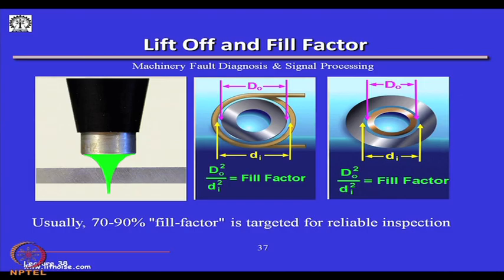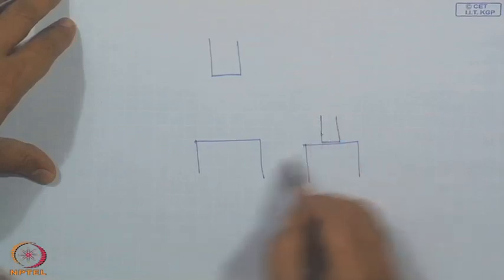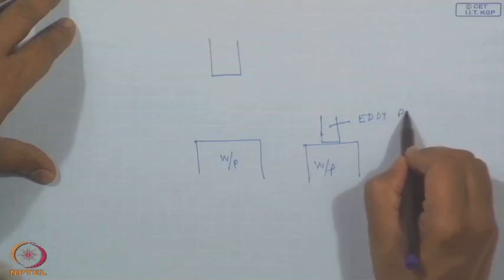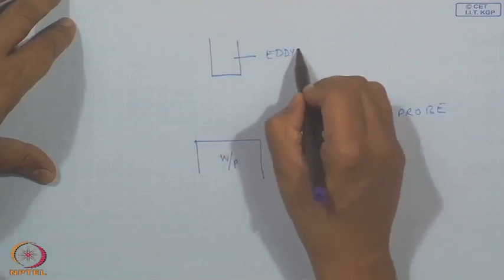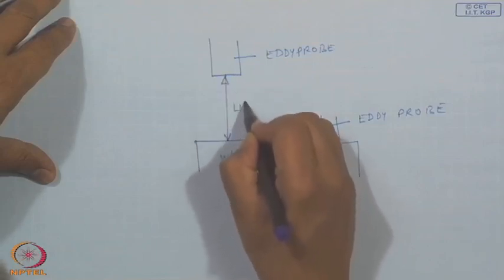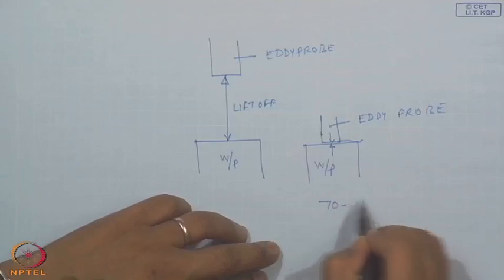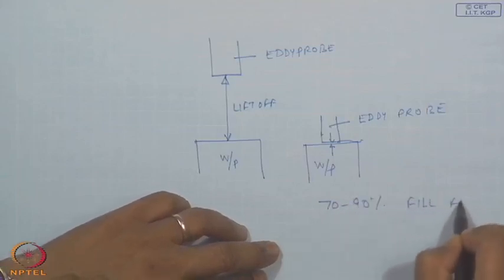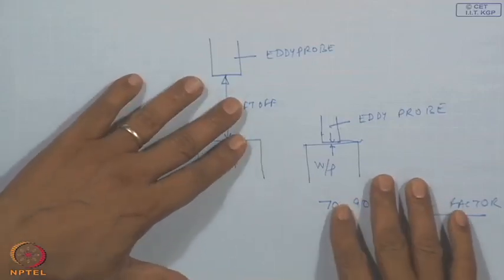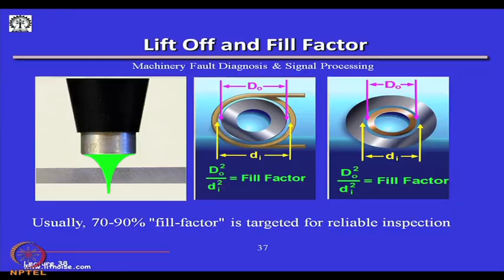You should not be too far away or too close. If you lift the probe off, the diameter ratio changes because of the lift-off. So we have to ensure we are within 70 to 90 percent of the fill factor. These kinds of experiences come from field analysis and are thumb rules to keep in mind while measuring.